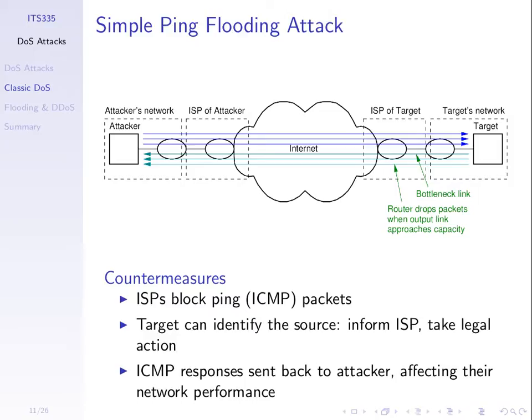Let's say ISPs don't block the traffic and they get to the target and overflow. Every ping packet received contains the source IP address, and the way IP addresses are structured they identify the internet service provider. The target can quite easily find who the ISP is for the attacker, then contact the ISP, and the ISP will know which customer had that IP address and can take some action to stop them in the future.